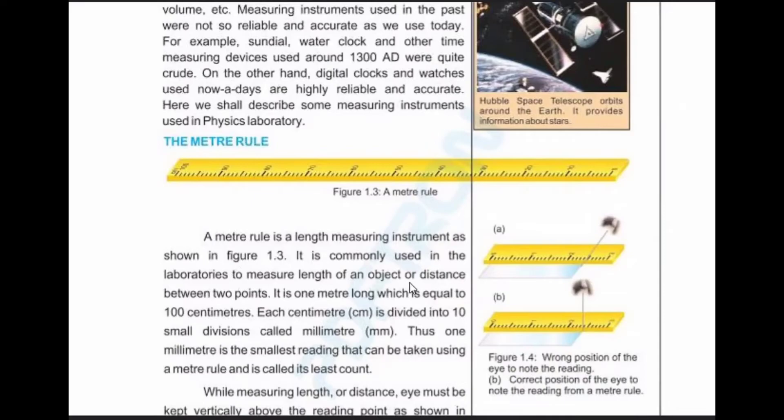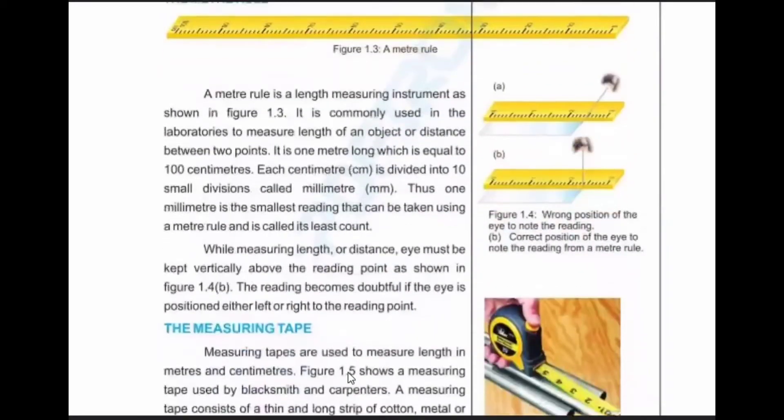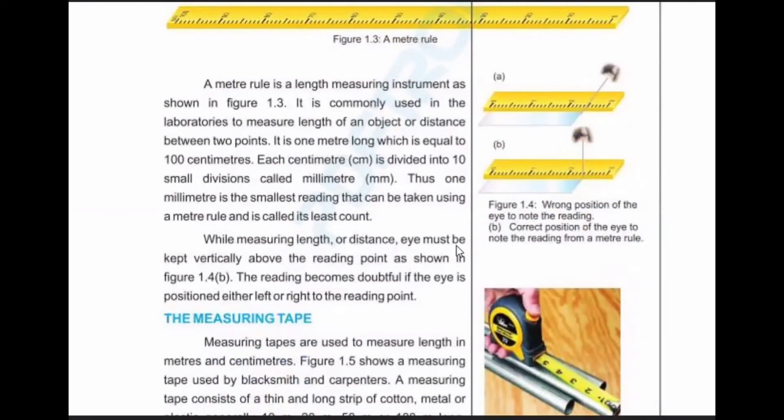The metre rule is used to measure the length of an object or distance between two points. It is one meter long, which is equal to 100 centimeters. Each centimeter is divided into ten small divisions called millimeters. One millimeter is the smallest reading that can be taken using a metre rule and is called its least count.